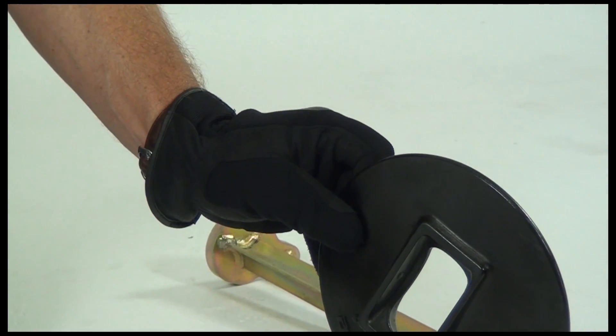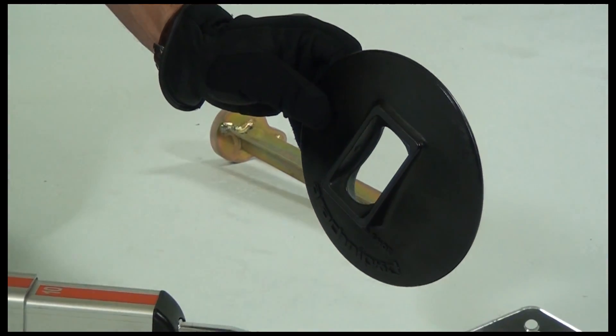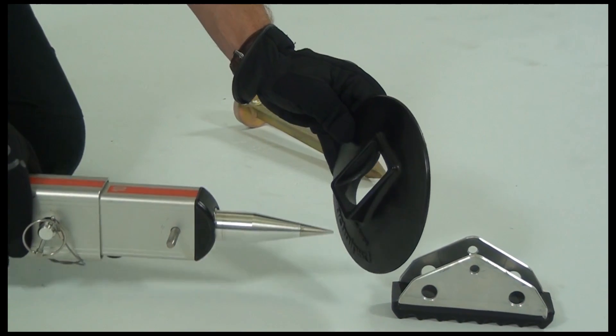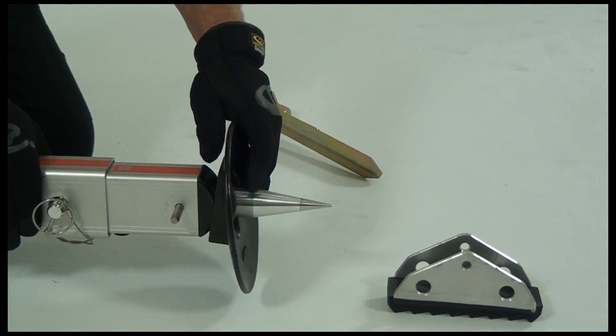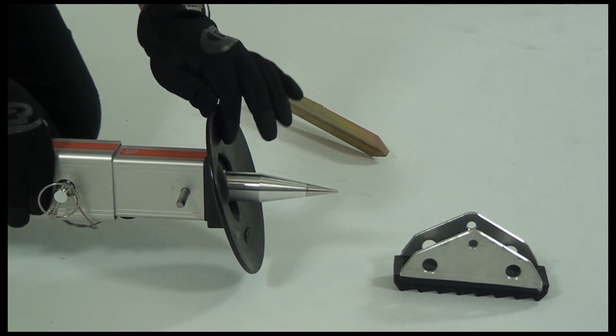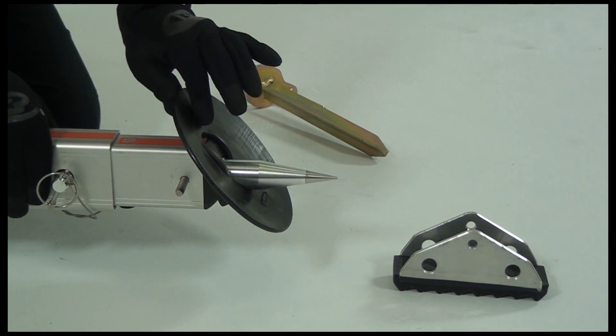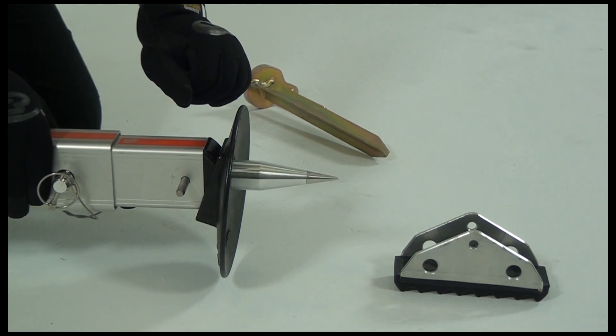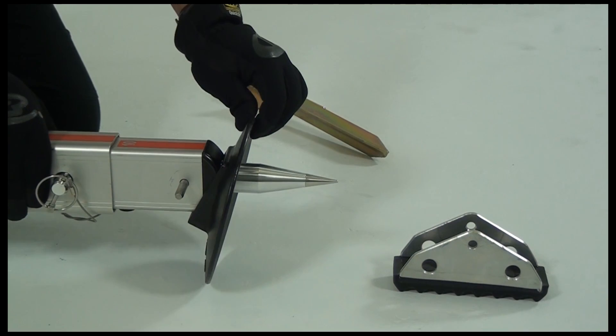A soft ground shoe is also available and this is used in conjunction with the spike foot. The soft ground shoe clips over the spike foot allowing the spike to dig into the surface such as sand while preventing the leg from sinking further.